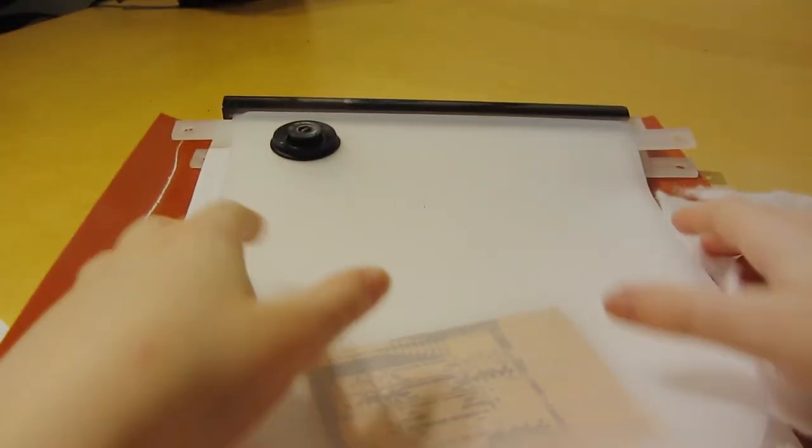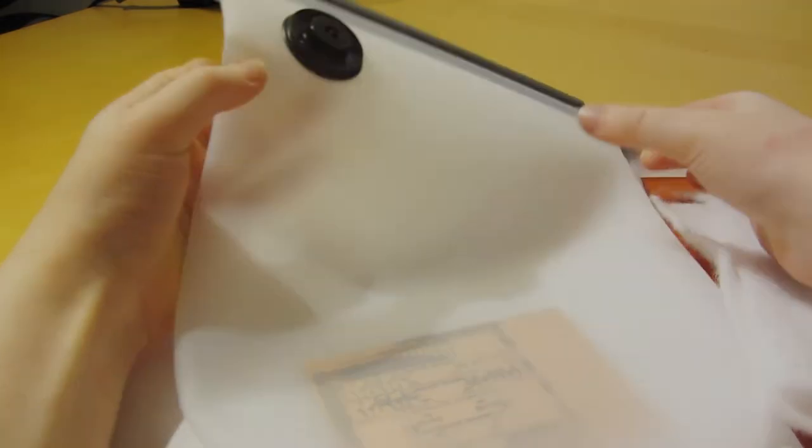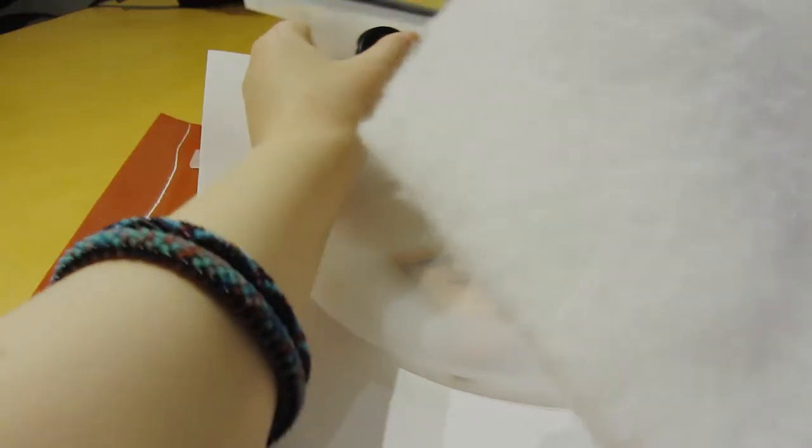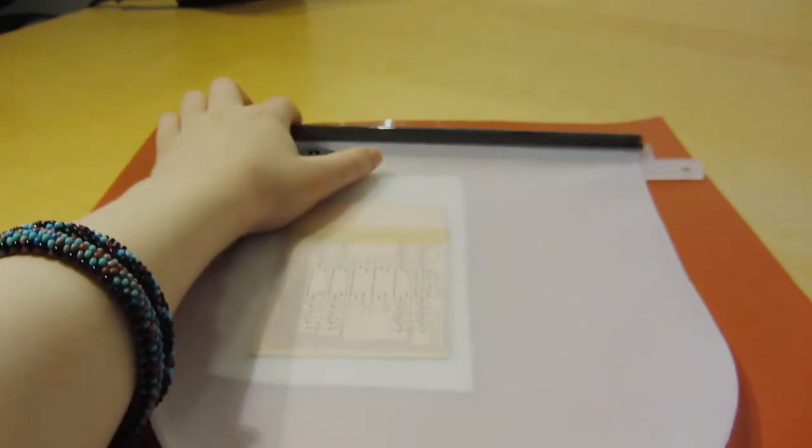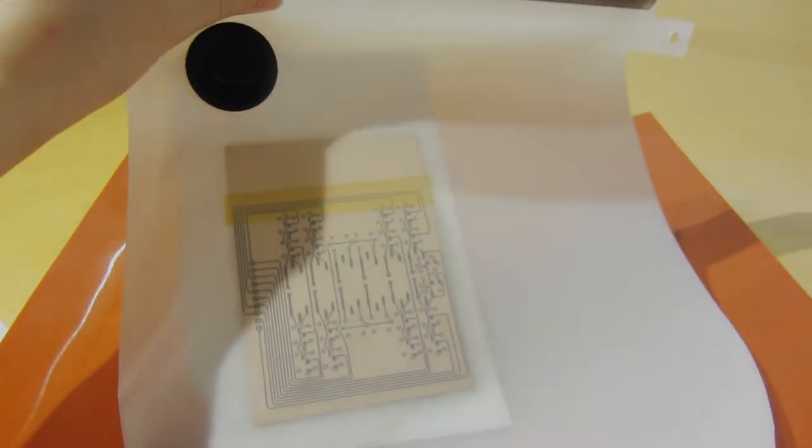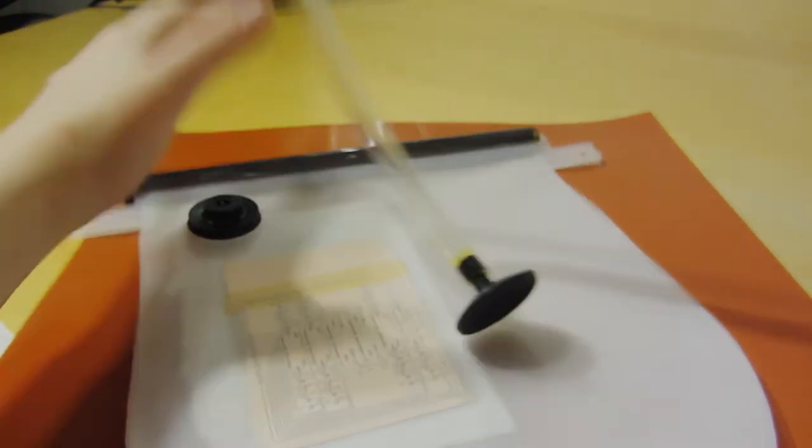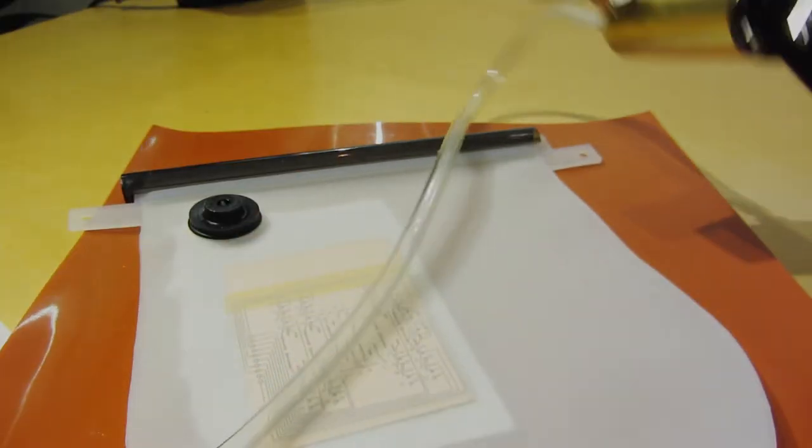And then we need to vacuum it down in the vacuum seal bag, and we will link to that in the description. And then we will add the bleeder breather cloth underneath of the board here. Try to say bleeder breather cloth five times fast. And then we will vacuum it down with this and this.